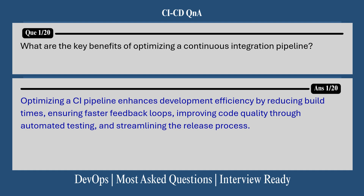Question number one is about optimizing a CI pipeline. What are the key benefits of optimizing a continuous integration pipeline? Optimizing a CI pipeline enhances development efficiency by reducing build times, ensuring faster feedback loops, improving code quality through automated testing, and streamlining the release process.